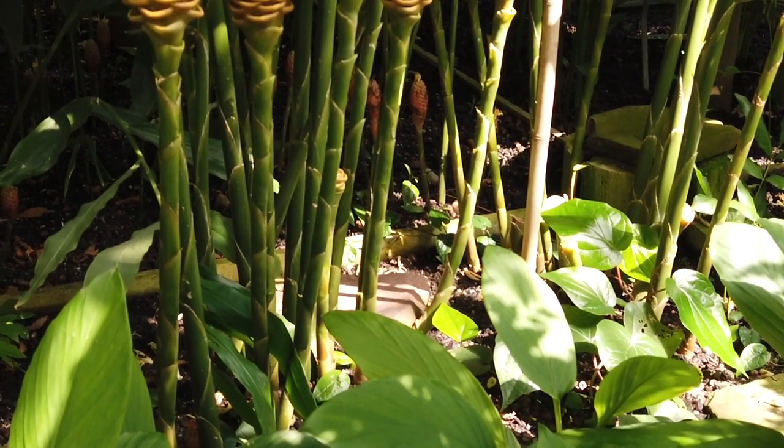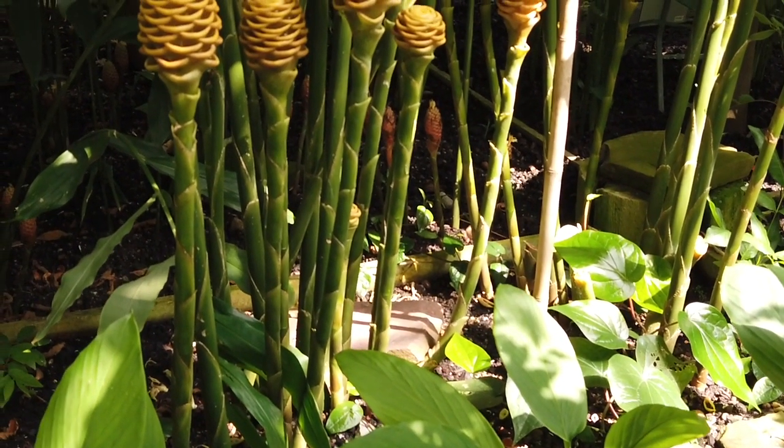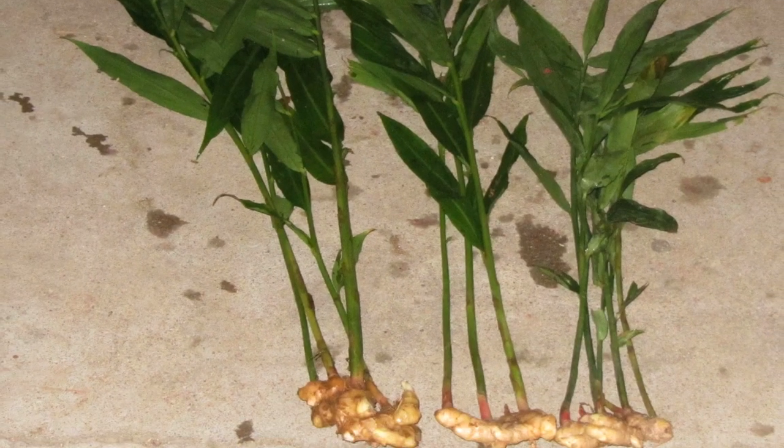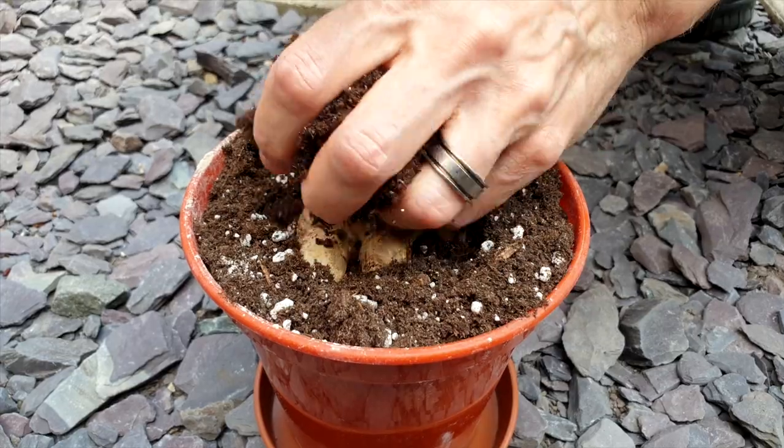Ginger is believed to be one of the oldest cultivated spices. And unlike most plants, it doesn't grow from seeds. It's only grown by propagating the ginger rhizome, which is part of the reason it's believed to have been cultivated for so long.